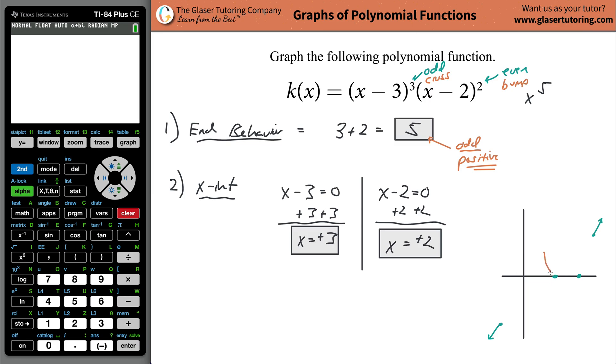So when you solve for your x-intercept of positive two, that came from this factor, and that factor has an even multiplicity, so we should expect it to be a bump. Either the bump happens from the top or from the bottom. Which one should it be? You're basically going to look towards your end behavior.